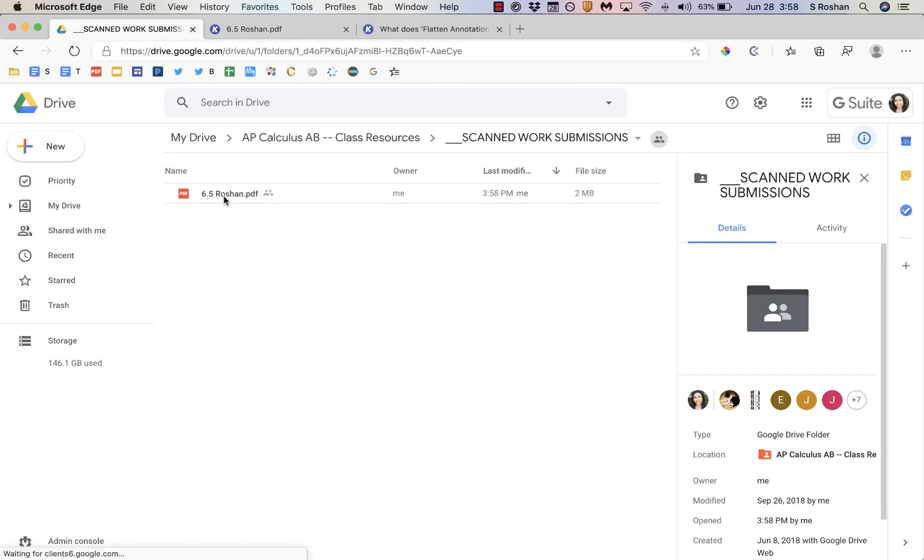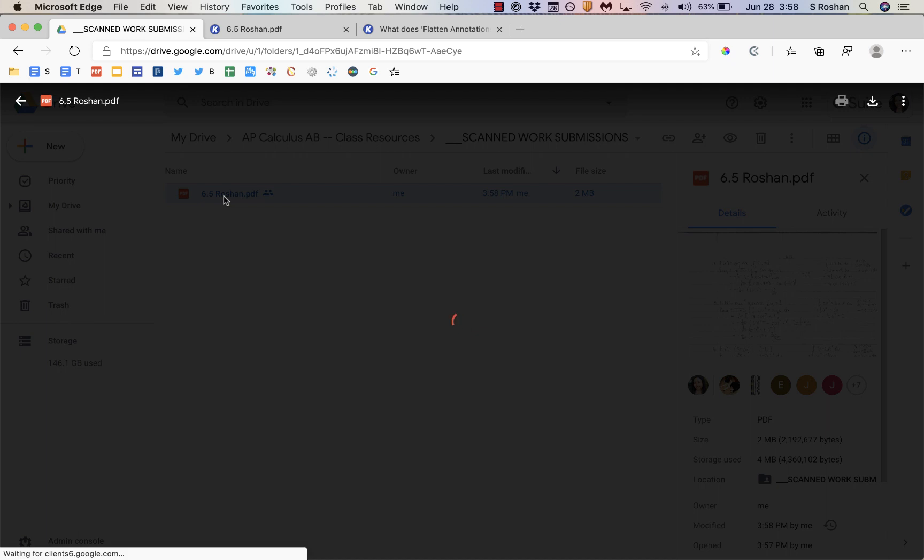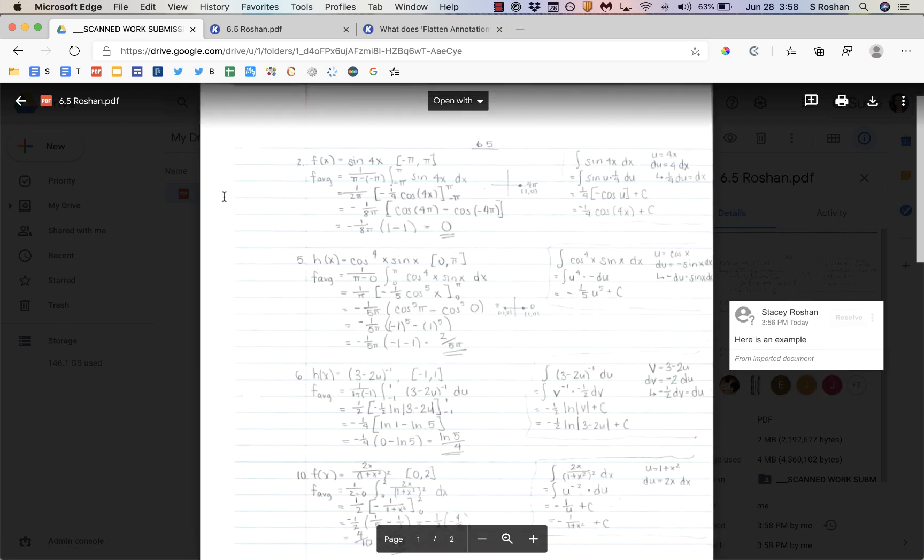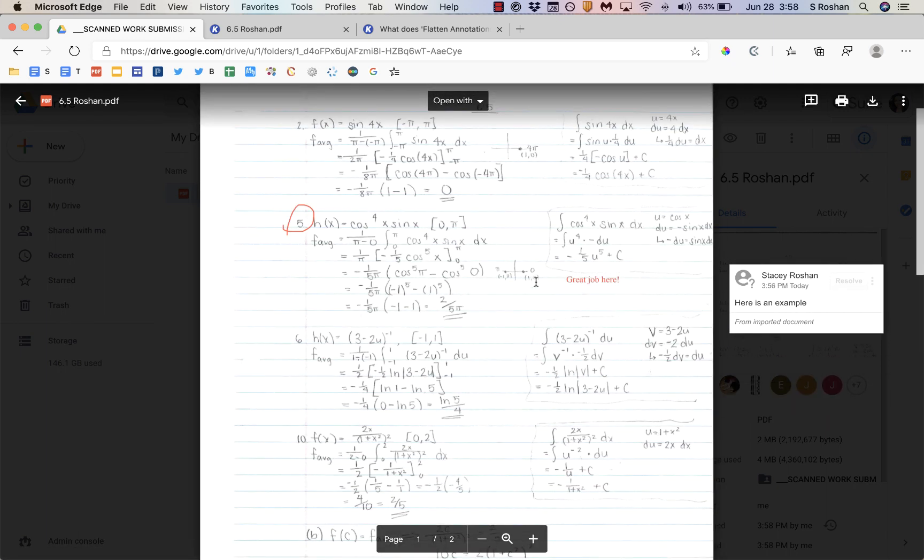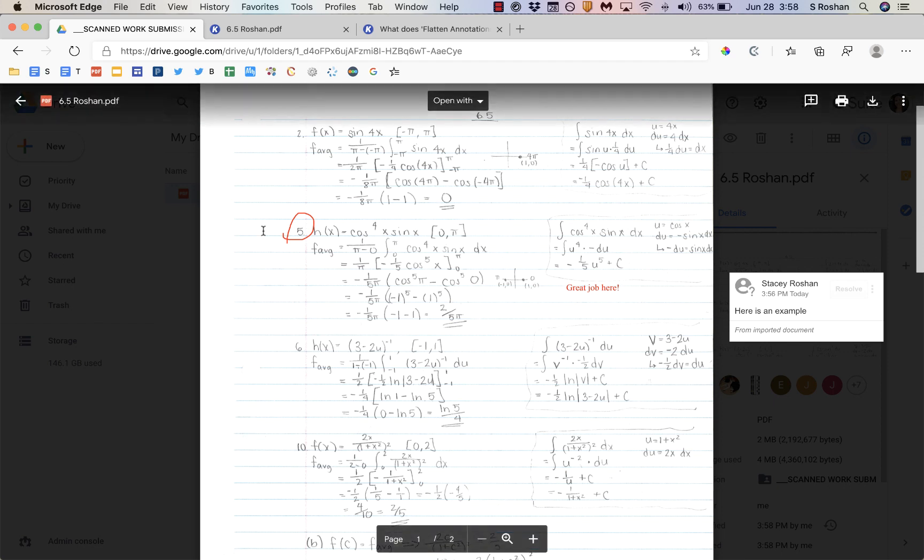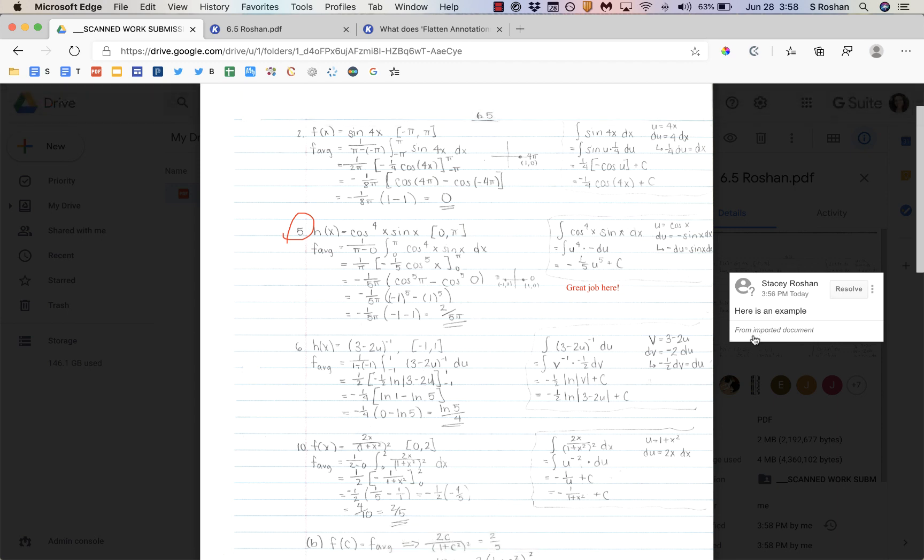Now pretend that I'm a student and I just open it up, so I don't have Kami, I just open it up. Then you'll see that the student can see everything. They don't need Kami in order to see all the annotations that I've given them.